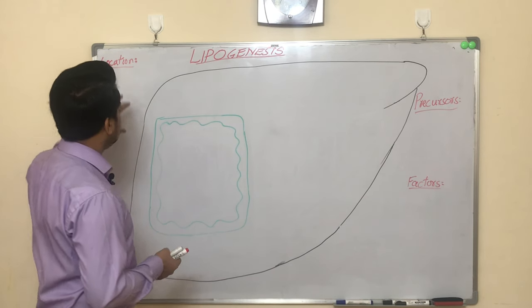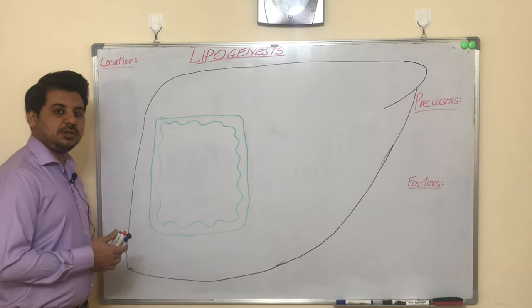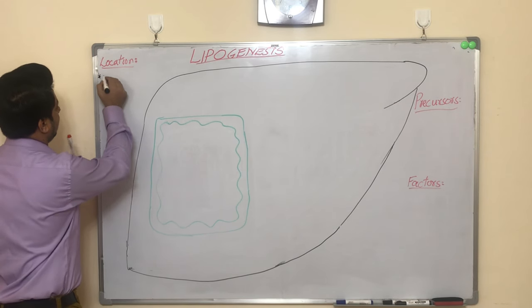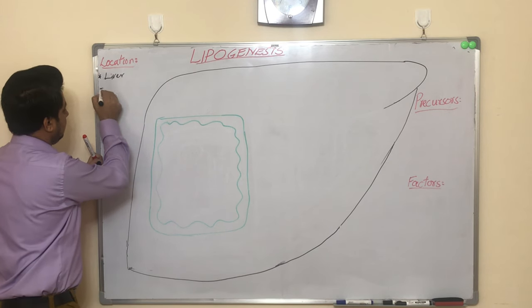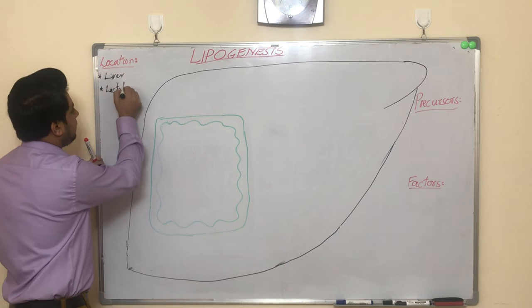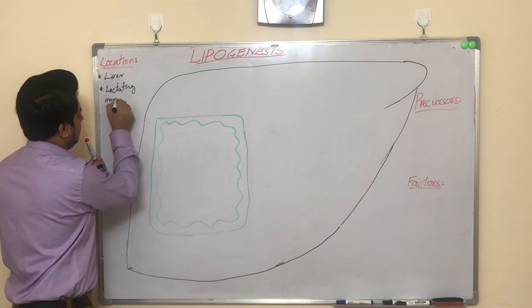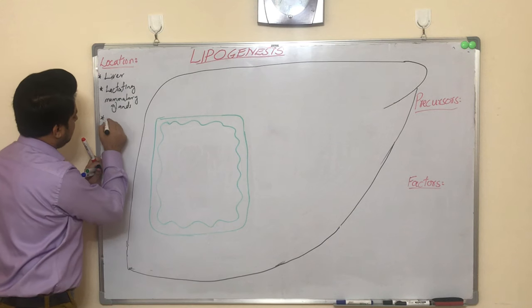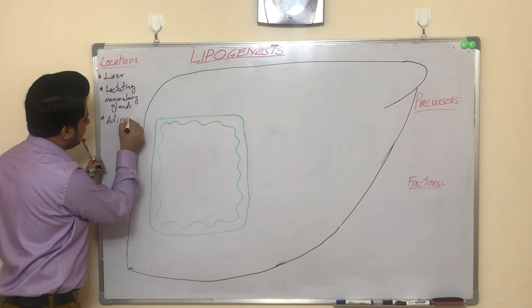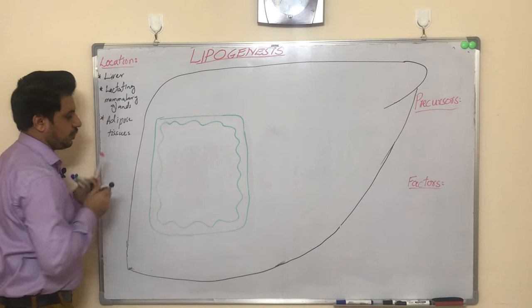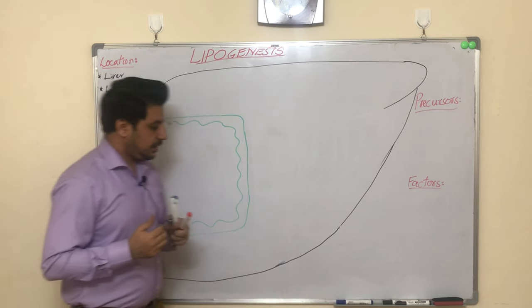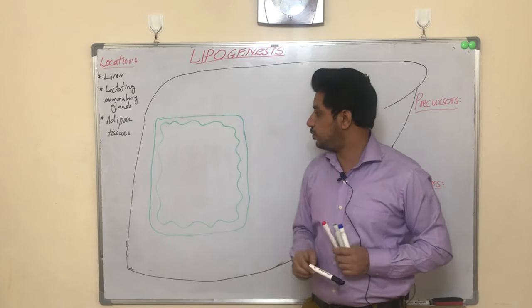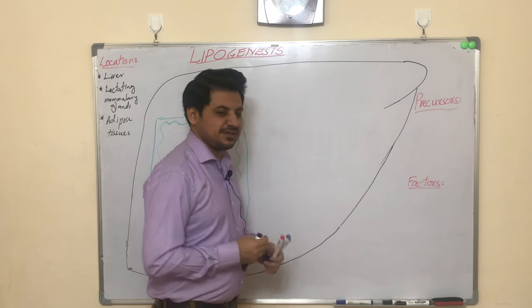First, we must know the location where lipogenesis takes place. Lipogenesis occurs: number one, majorly in the liver; number two, in the lactating mammary glands; and to a very lesser extent in adipose tissues.